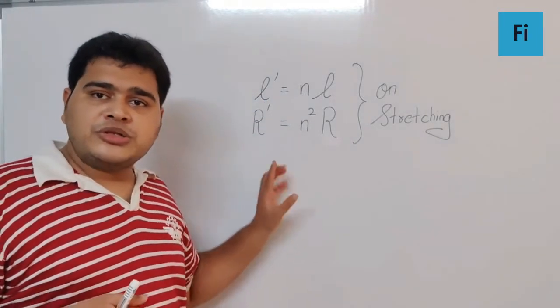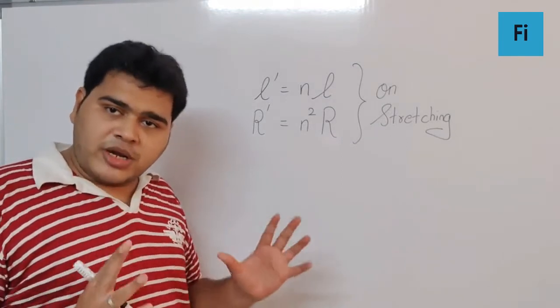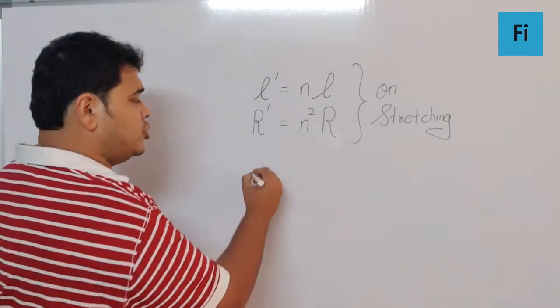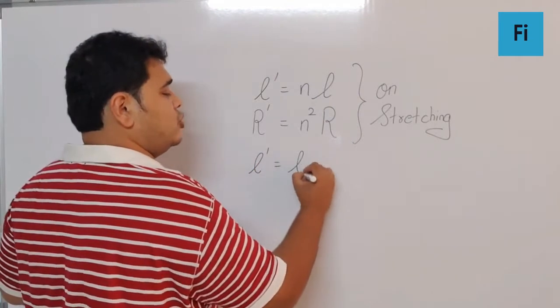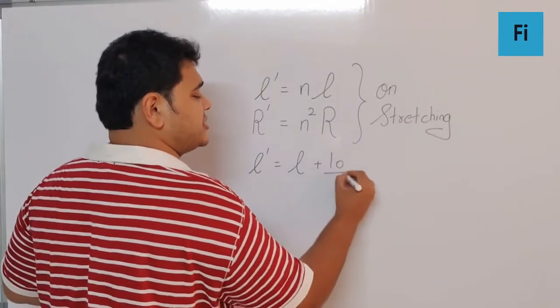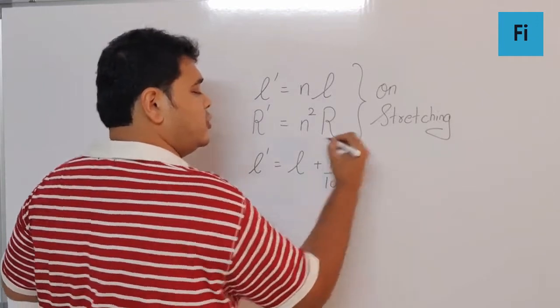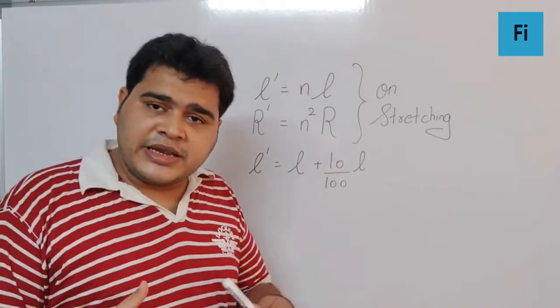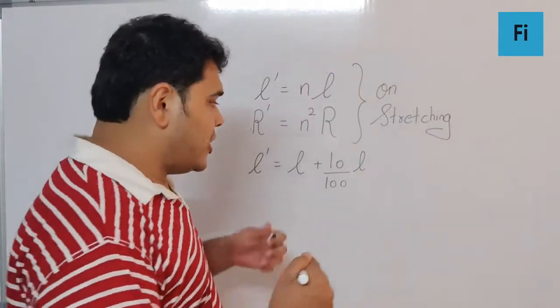So you need to remember this as a shortcut. Over here I can say the new length is the original length plus 10% of original length, because they mentioned that the length is increased by 10%. So I can say this is 1 plus 0.1, which is going to be 1.1n.